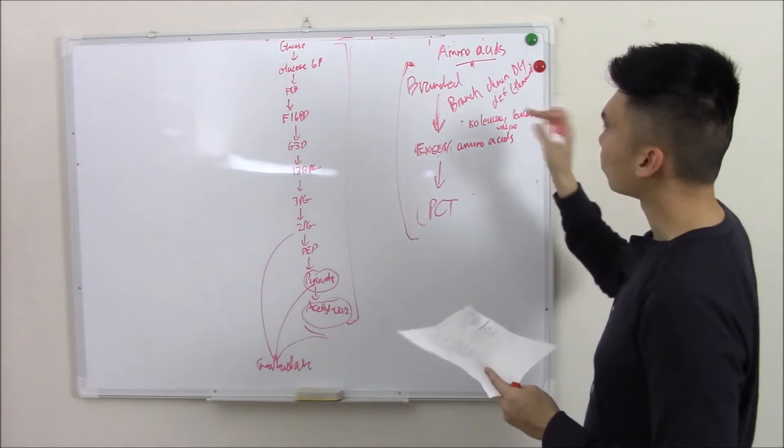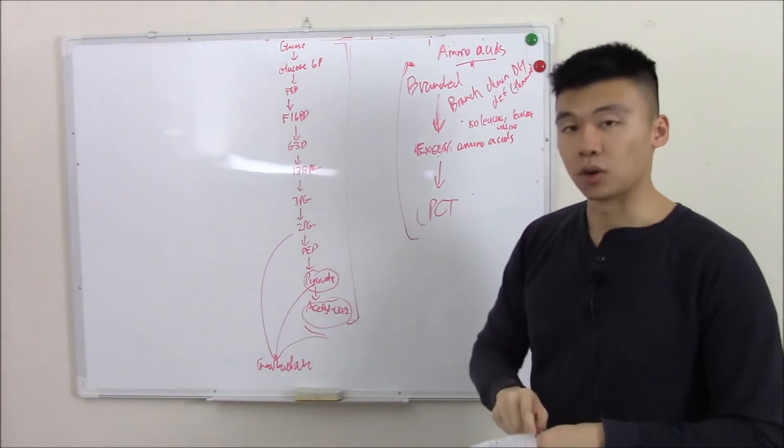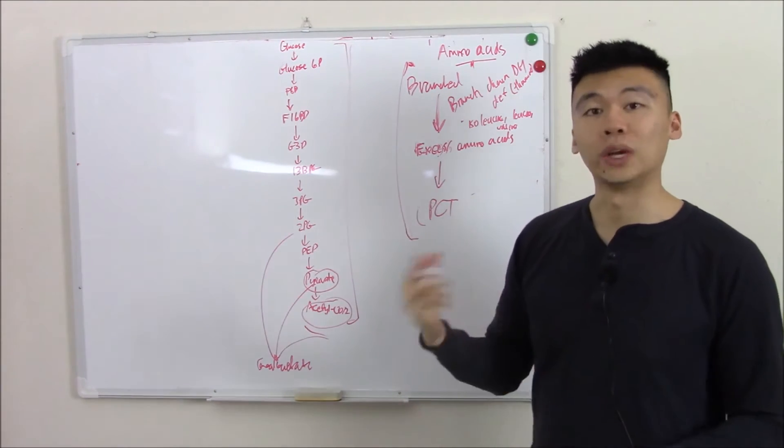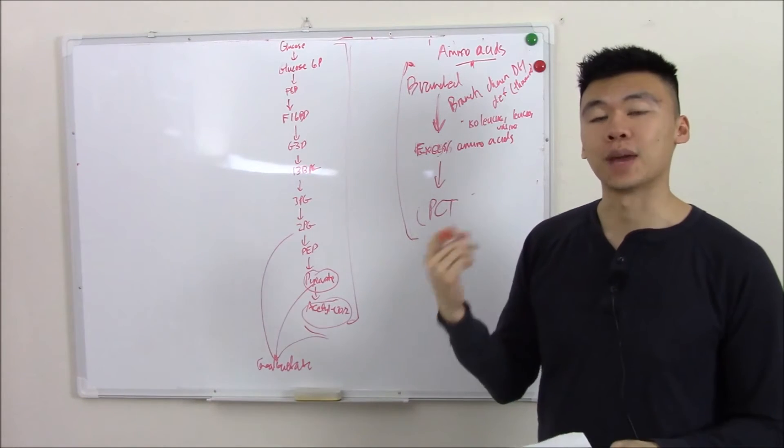this dehydrogenase needs thiamine. If you can't break that down, you just pee it out. And your urine smells very sweet. It almost smells like maple syrup.